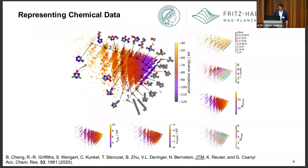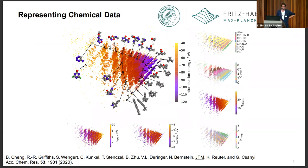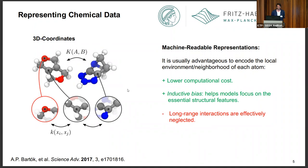A nice way to visualize this is using KPCA maps — kernel principal component analysis — where the distance between two points, each point representing one of the QM9 molecules, is related to how similar our representations and our kernel thinks they are. The real kicker is that if we then color these maps with some chemical properties, these tend to be smoothly distributed across these maps, meaning we can use this similarity to interpolate between different systems. We don't need to run a hundred thousand DFT calculations; we just need some representative samples.